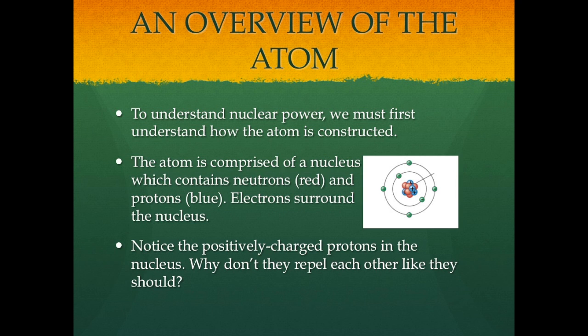An overview of the atom. As you can see, this is an atom. To understand nuclear power, we must first understand how it's constructed. The atom is comprised of a nucleus, which contains the neutrons — indicated in red — and the protons, indicated in blue. Electrons, which are green, surround the nucleus.